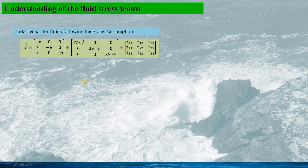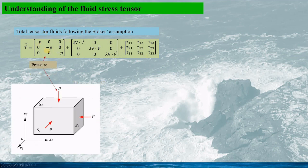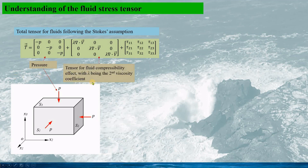Based on the Stokes assumption for the Newtonian fluid, we can express the total stress tensor T in this form. The first term on the right-hand side is from the pressure, and the negative sign means the pressure is always opposite to the surface normal vector. The second term accounts for the fluid compressibility effect with lambda being the second viscosity coefficient, and the last term is the fluid viscous stress tensor.